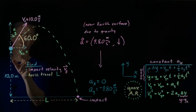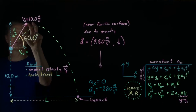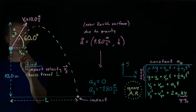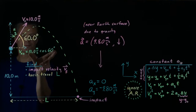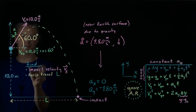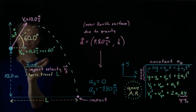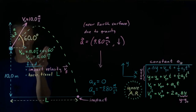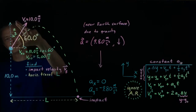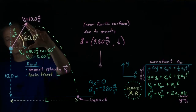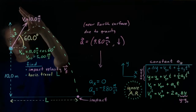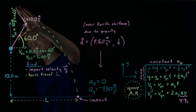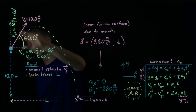Adjacent goes with cosine, and opposite goes with sine. So v sub x zero will be magnitude 10 meters per second times the cosine of 60 degrees. Cosine of 60 degrees is one-half, so that gives us 5 meters per second. Meanwhile, v sub y zero is the side opposite the 60-degree angle, so v sub y zero will be 10 meters per second times the sine of 60 degrees, which equals 8.66 meters per second.